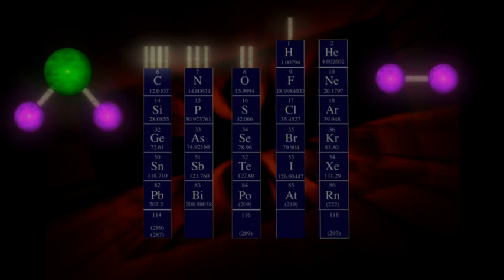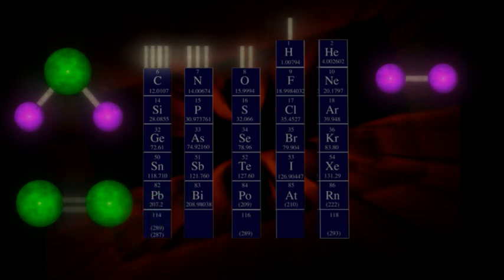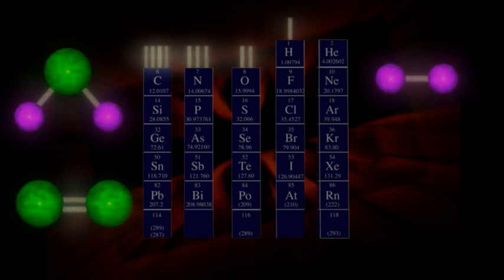Now there can be double bonds as well. Since oxygen wants to make two bonds, it can get together with another oxygen atom in a way that uses both available bondings. This oxygen molecule satisfies the bonding urge of both atoms, and the resulting double bond is very strong.